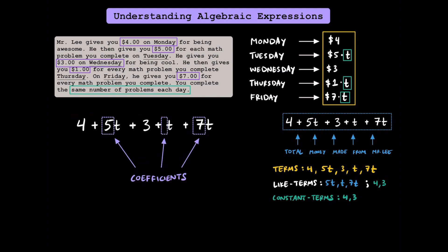Then we have these things called coefficients. Coefficients help tell us how many of each variable we have. Here we have a coefficient of 5, which represents $5 per problem. Here we don't see a coefficient, but it's actually because there's a 1 here. Since 1 times any number is always just that number, we typically don't write this 1. Regardless, it's important that you understand that there's a 1 here even though we don't see it — kind of like how you can say you just had a slice of pizza instead of saying 1 slice of pizza. And this 7 is a third coefficient representing $7 per problem on Friday. The coefficients here are 5, 1, and 7.